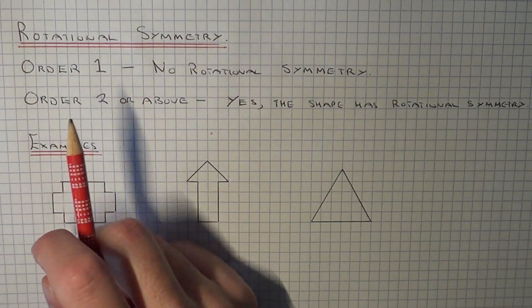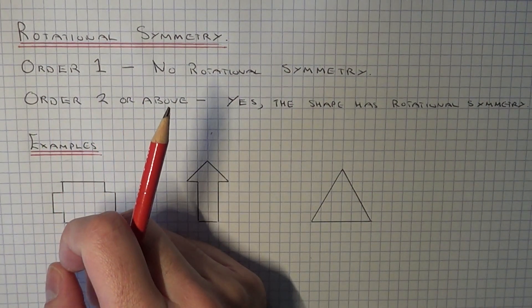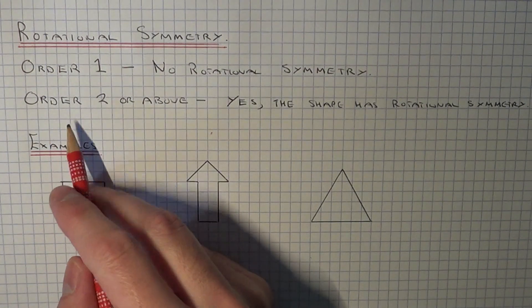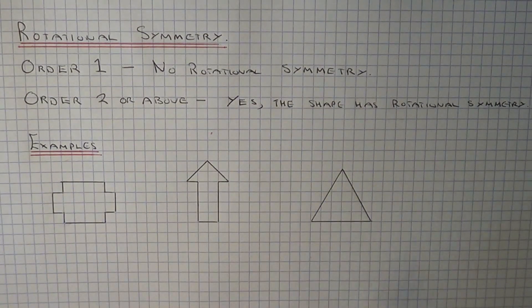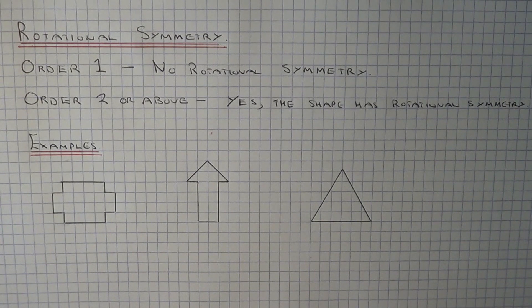If you can turn a shape onto itself two times or more, then the shape will have Rotational Symmetry. And let me just say, the amount of times you can turn a shape onto itself is called the order.